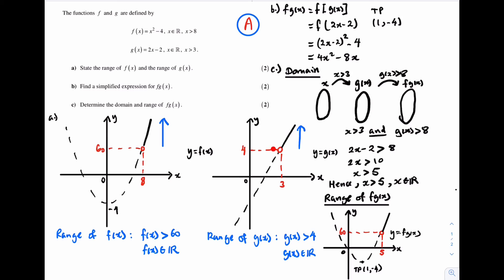Going back to the circles: if these circles were shaded then the corresponding x values would be included in the domain and the corresponding y values would be included in the range. To find the range I need to focus on the y axis. The range will just be f of g of x is greater than 60. Range of f of g of x is therefore f of g of x is greater than 60, f of g of x is an element of the real number set.